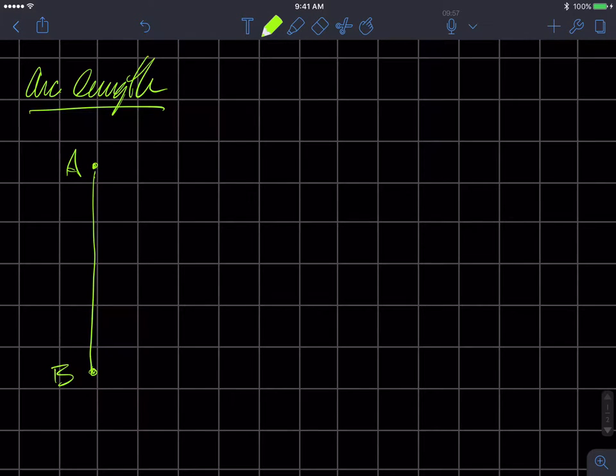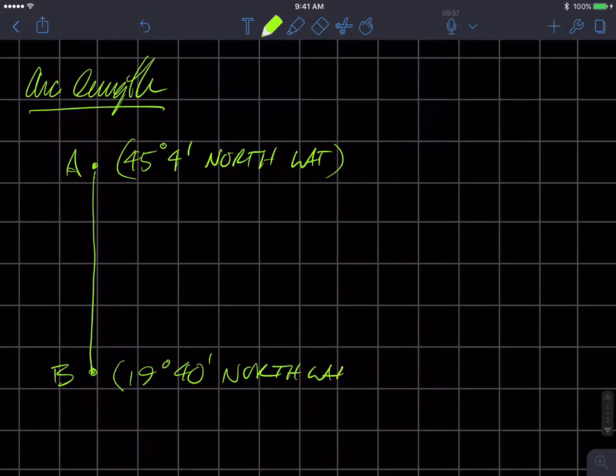City A is due north of City B. Find the distance between City A, and they tell you that it's 45 degrees and 4 minutes north latitude, and City B, which is 19 degrees 40 minutes north latitude. Assume that the radius of the Earth is equal to 3960 miles. They want it in miles rounded to the nearest mile, so we don't have to worry about any decimals.